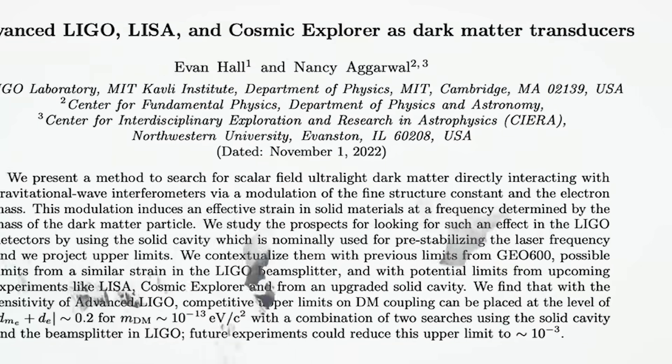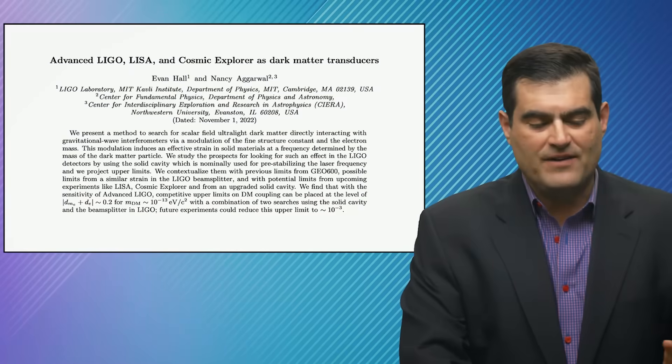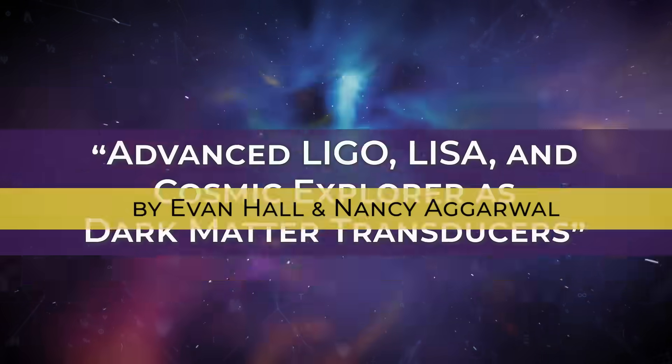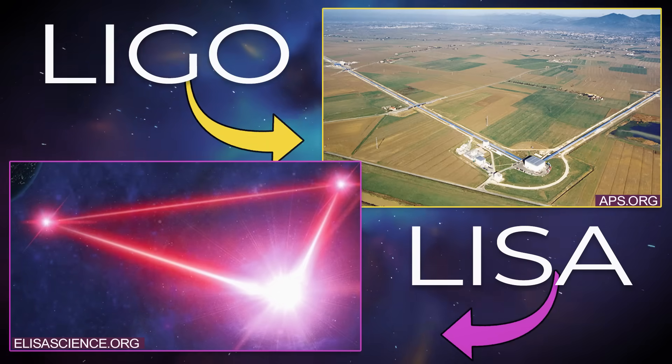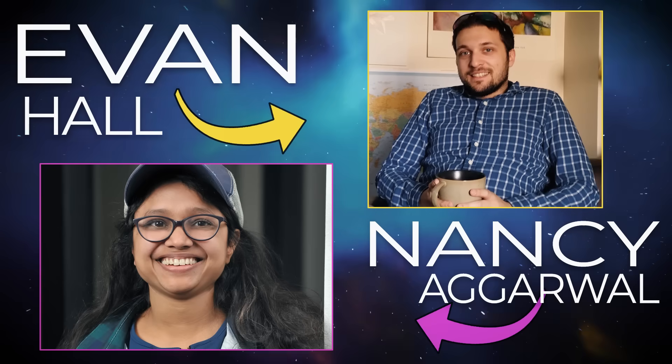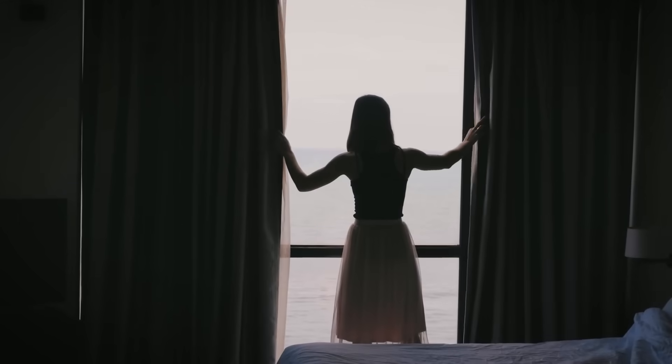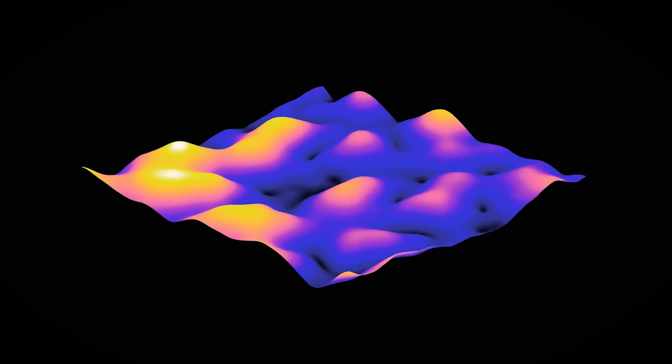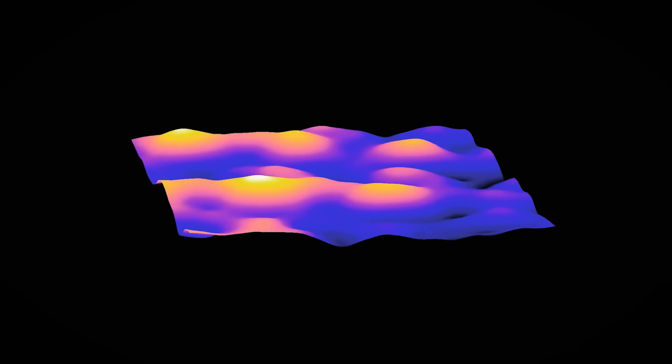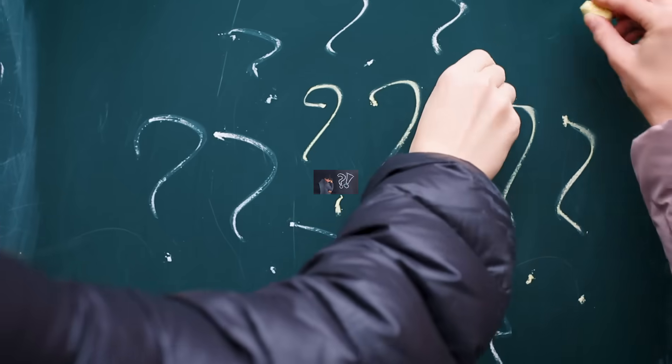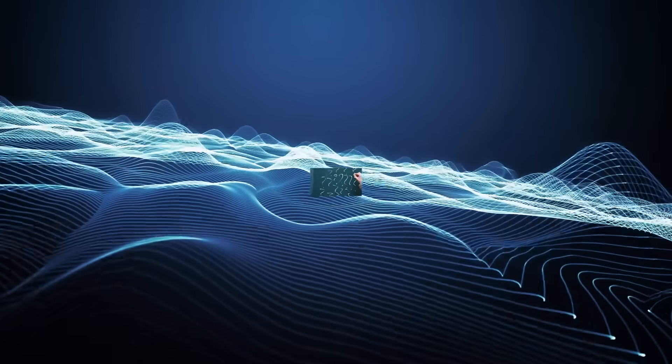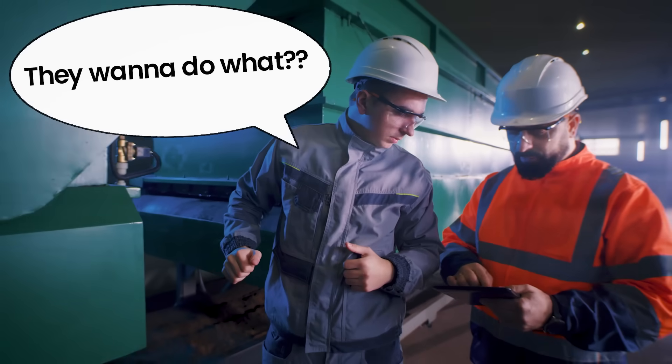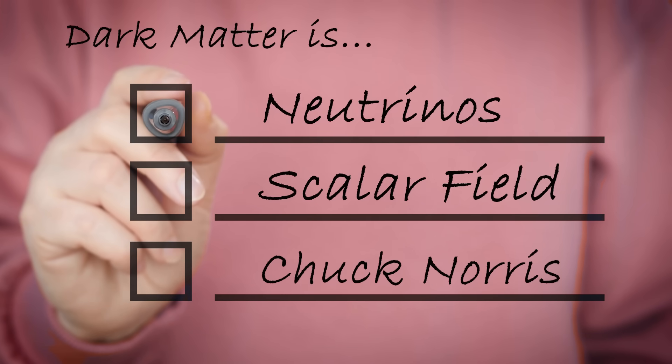We're going to be discussing this paper, which describes advanced LIGO and LISA, a future space-born version of LIGO, as ways to detect dark matter by Evan Hall and Nancy Agarwal. This is looking for what's called a scalar field, ultralight dark matter candidate, which have become popular. We're combining together two different great mysteries: very sensitive gravitational wave detectors not used for gravitational wave detection, and exotic candidates for dark matter.